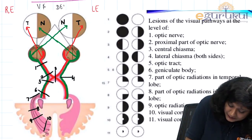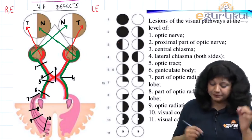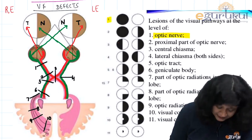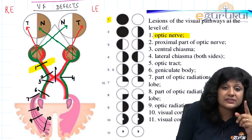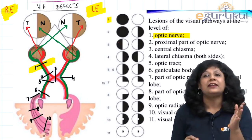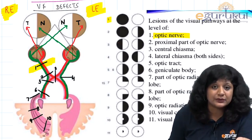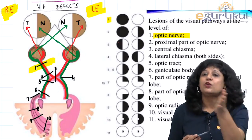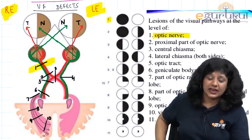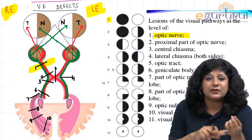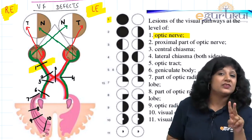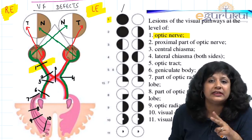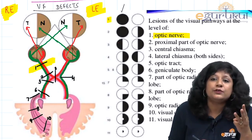Now for visual field defects. At the level of the optic nerve, both the nasal and temporal retina of the same side are affected, giving total blindness on the same side with normal vision on the other side — this is the optic nerve defect. When viewing the patient face to face, remember that the patient's right eye does not lie on your right side.